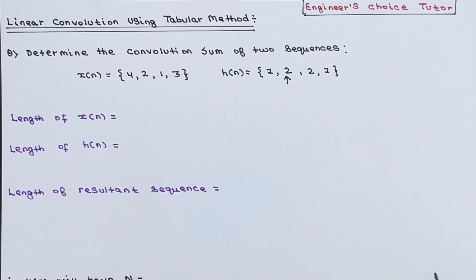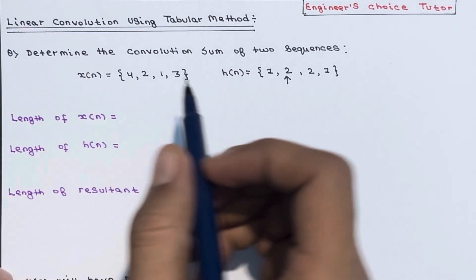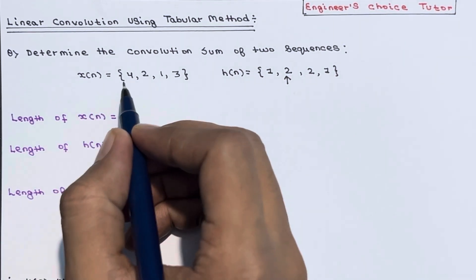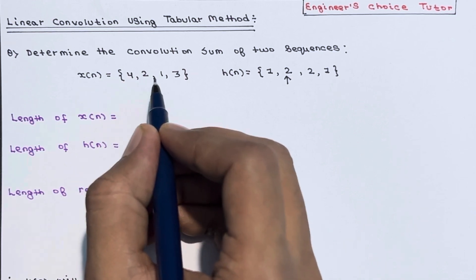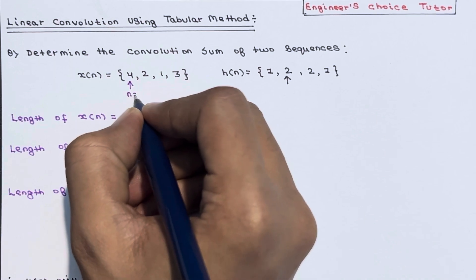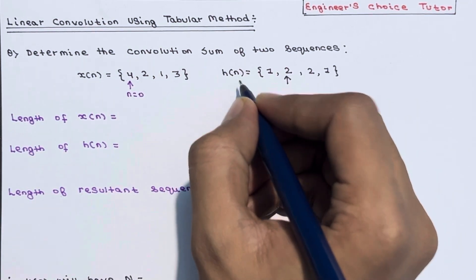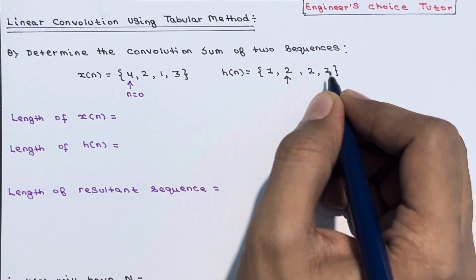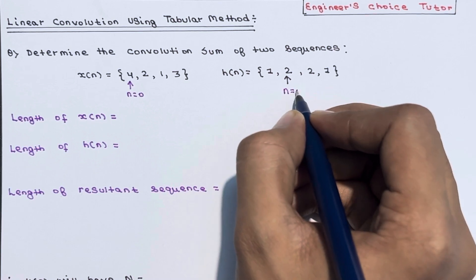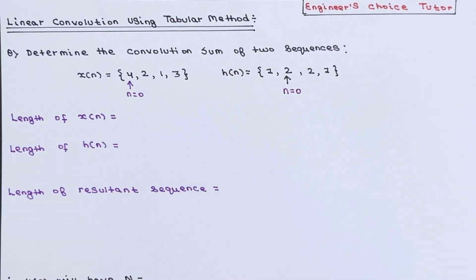In this lecture we will talk about linear convolution using the tabular method. We have to determine the convolution sum of two sequences: x[n] = {4, 2, 1, 3} where the first term is at n=0, and h[n] = {1, 2, 2, 1} where the arrow represents the term at n=0.